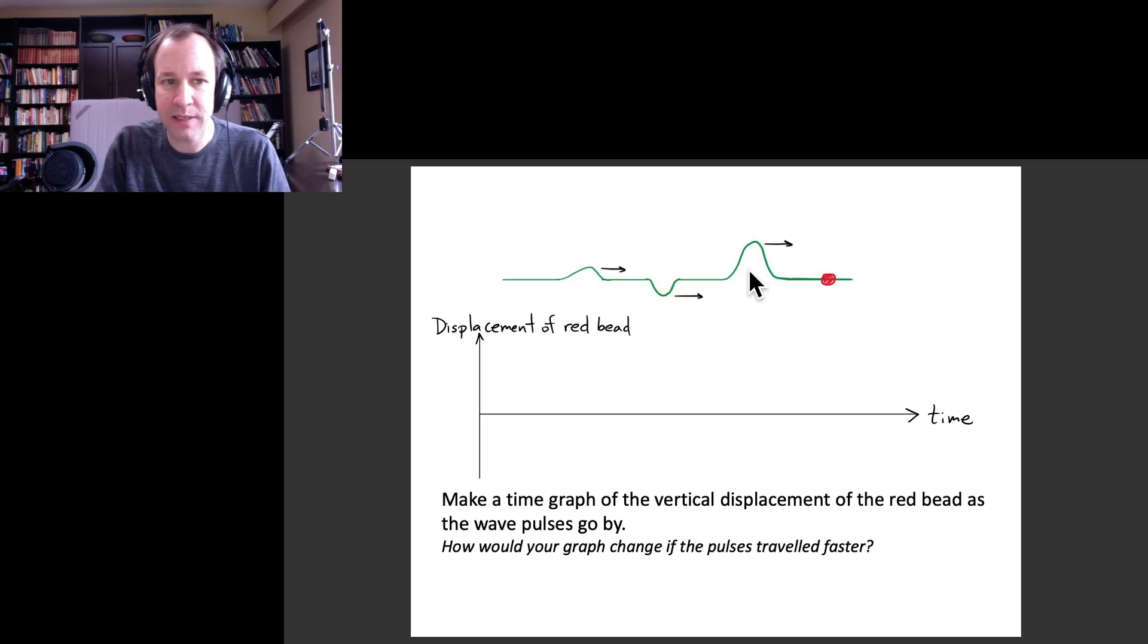What I want you to do is try to make a time graph of what will this red bead do as a function of time. And then once you've done that, I want you to think about how would your graph change if these pulses were to travel faster. Pause the video and maybe do that on a piece of paper and then come back.